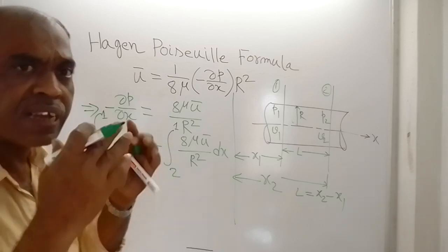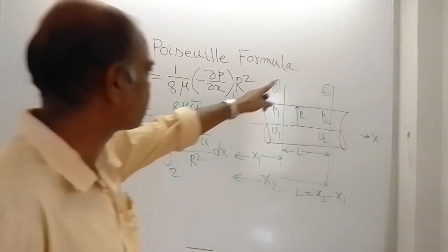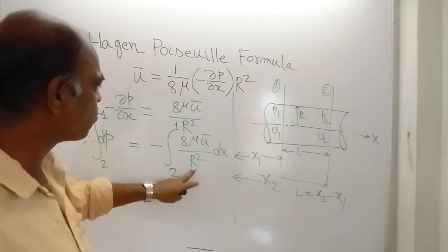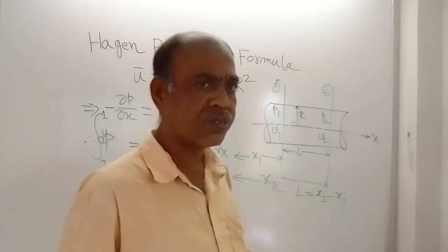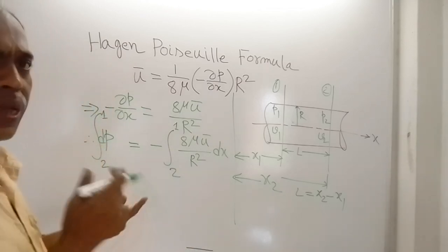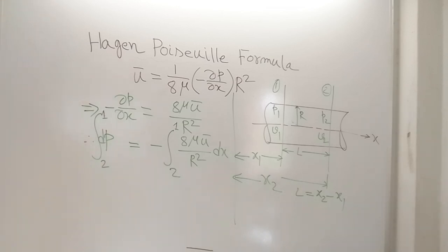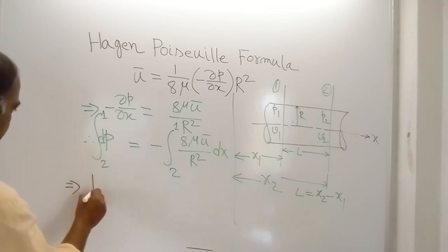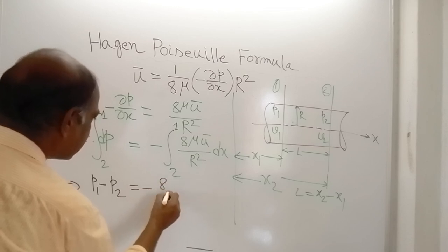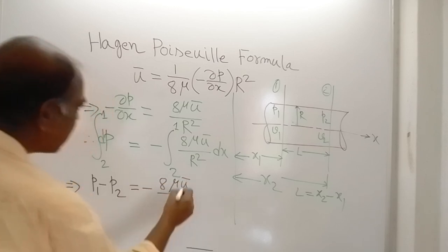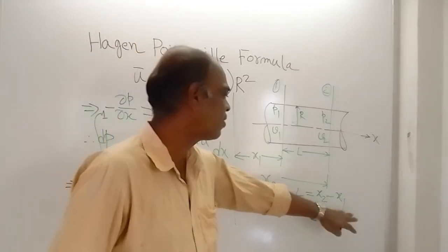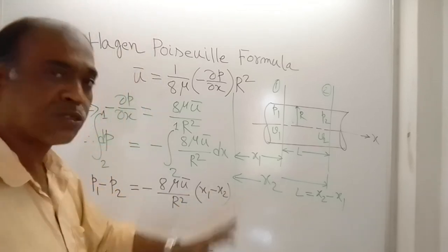In the right-hand side, only X is the variable, and in the left-hand side only P. The integration gives P1 minus P2 on the left-hand side, and on the right-hand side, since 8μU_bar/R² is constant, it comes outside the integral, giving X1 minus X2. Since X2 minus X1 equals L, this minus of X1 minus X2 equals L.